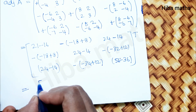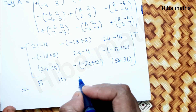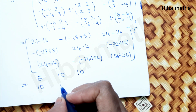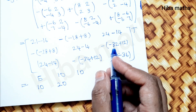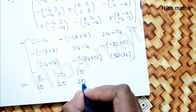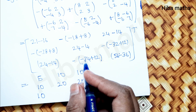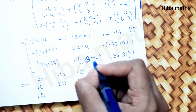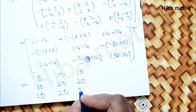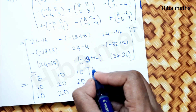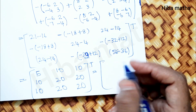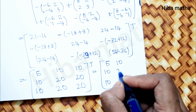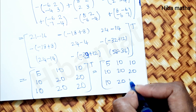After computing all cofactor values: 5, 10, 10 in the first row; 10, 20, 20 in the second row; 10, 20, 20 in the third row. Taking the transpose gives adjoint of A as [5, 10, 10; 10, 20, 20; 10, 20, 20]. So adjoint of A equals that matrix.